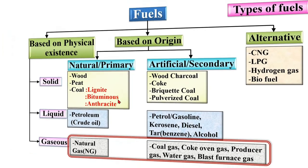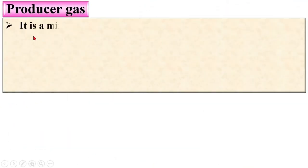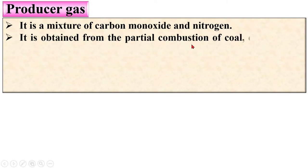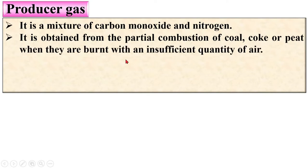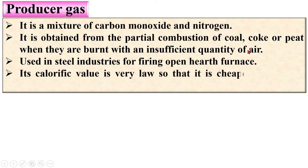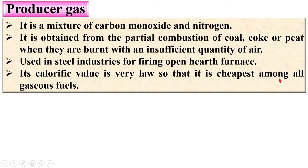Next is producer gas. It is a mixture of carbon monoxide and nitrogen. It is obtained from the partial combustion of coal, coke, or peat when they are burned with an insufficient quantity of air — that means partial combustion. It is used in steel industries for firing open-hearth furnaces. Its calorific value is very low, so it is the cheapest among all gaseous fuels.